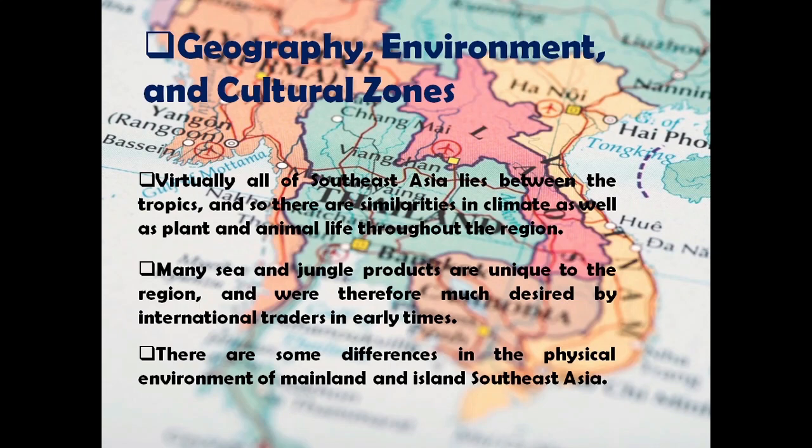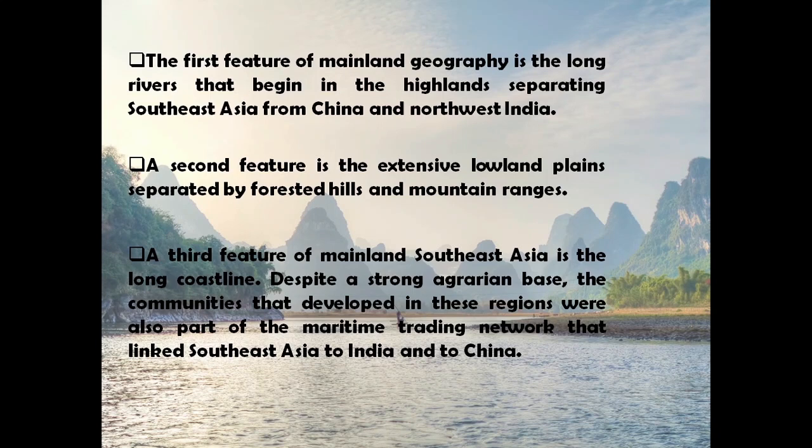These wind systems bring fairly predictable rainy seasons, and before steamships were invented, this wind system also enabled traders from outside the region to arrive and leave at regular intervals. Because of this reliable wind pattern, Southeast Asia became a meeting place for trade between India and China, the two great markets of early Asia.